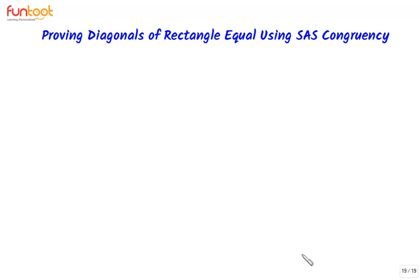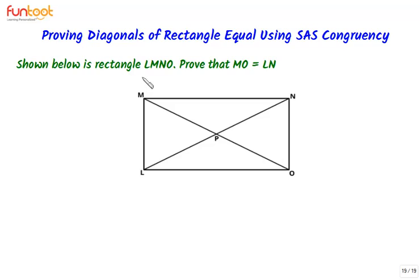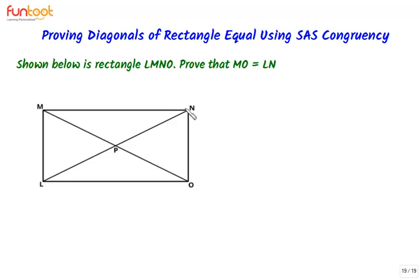We have learned the rules of congruency. Let's discuss how we apply congruence rules in proofs. Here is a well-known proof: that diagonals of a rectangle are equal. Shown below is a rectangle LMNO. Prove that MO is equal to LN. We have a rectangle LMNO and we have to prove that diagonals MO and LN are equal.